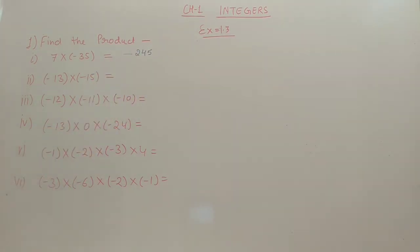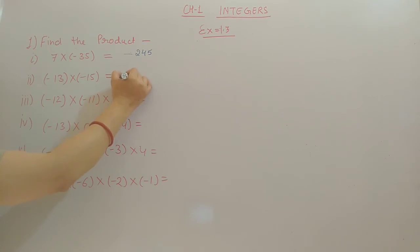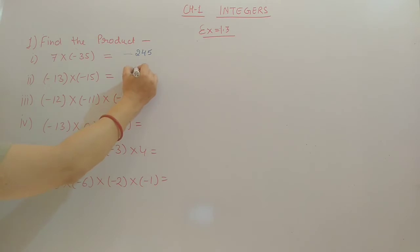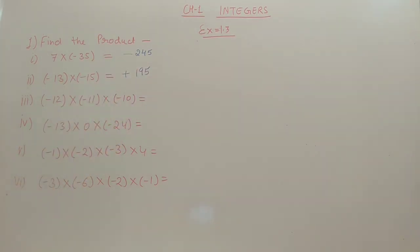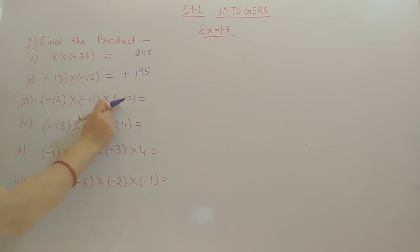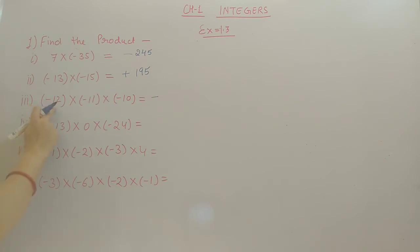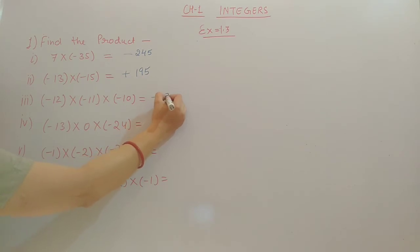The second one is minus 13 into minus 15. Minus into minus gives plus, and 13 into 15 gives 195, so the answer is plus 195. The third one is minus 12 into minus 11 into minus 10. The first two minuses become plus, and the third minus remains. The final symbol is minus. 12 into 11 is 132, and 132 into 10 is 1320, so the answer is minus 1320.